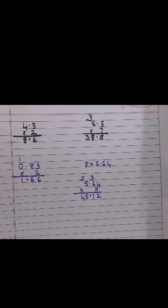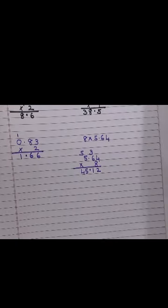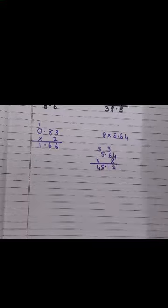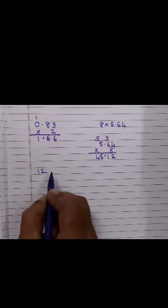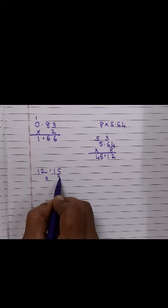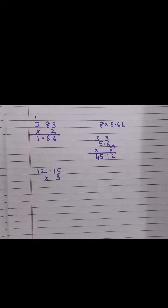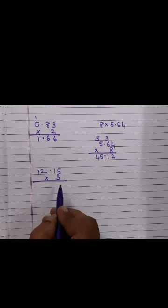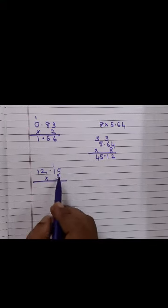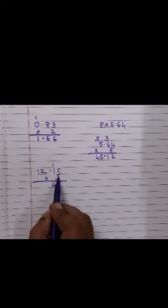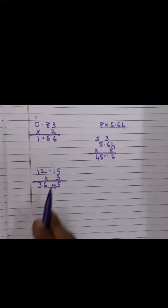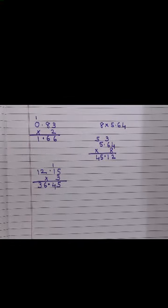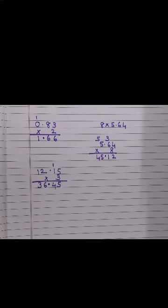Let's take from page 67. Let's take this. 12.15 into 3. 5 threes are 15 and 1. 3 ones are 3, 4. 3 twos are 6. 3 ones are 3. Now children, see, 2 place decimal from the right. 36.45.